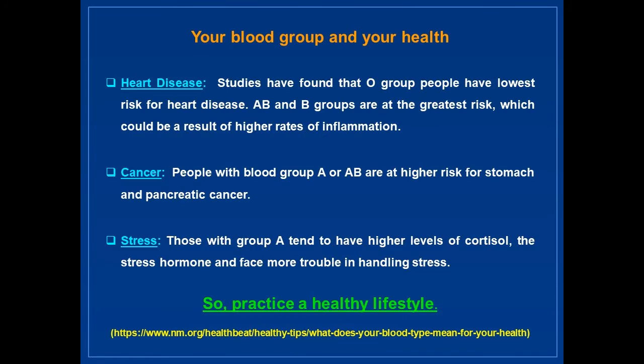It may be interesting to know the relationship between your blood group and your health. Studies have found that O group people have the lowest risk for heart disease. AB and B groups are at the greatest risk, which could be a result of higher rates of inflammation. People with blood group A or AB are at higher risk for stomach and pancreatic cancer. Those with A tend to have higher levels of cortisol, the stress hormone, and face more trouble handling stress. So, practice a healthy lifestyle.